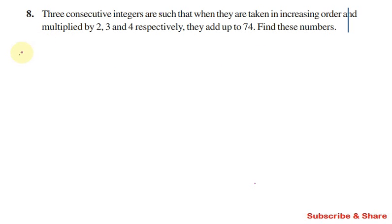Problem number 8. Three consecutive integers are such that when they are taken in increasing order and multiplied by 2, 3, and 4 respectively, they add up to 74. Find these numbers.